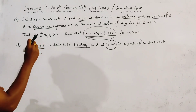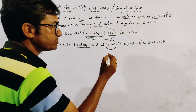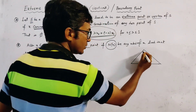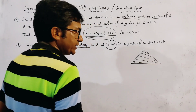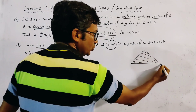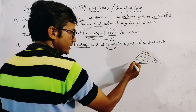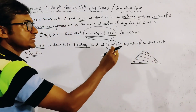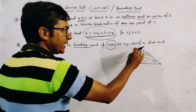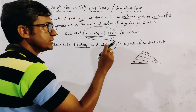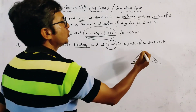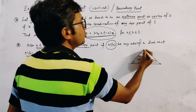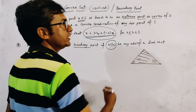Now we discuss these two terms with a rough sketch. Consider a triangle — we know that this is a convex set. If we take the vertices, we know that a triangle has three vertices, and each vertex cannot be expressed as the convex combination of any two points of this set, because convex combination means a line segment. If we take two points before and after this vertex, then those two points lie outside the set.